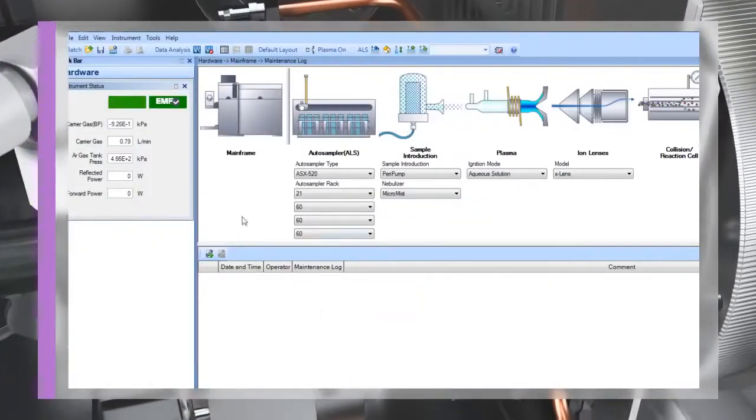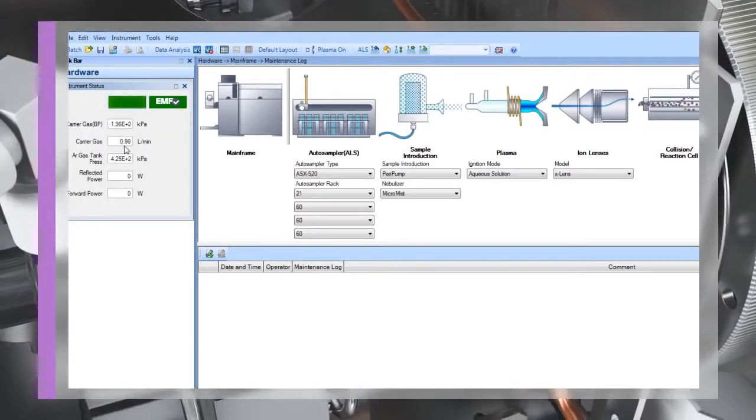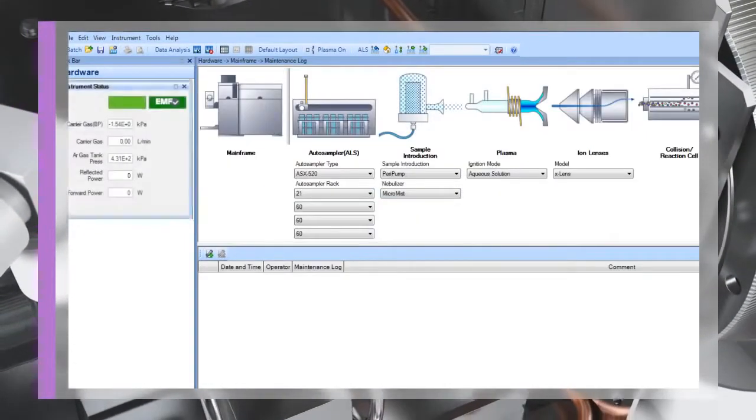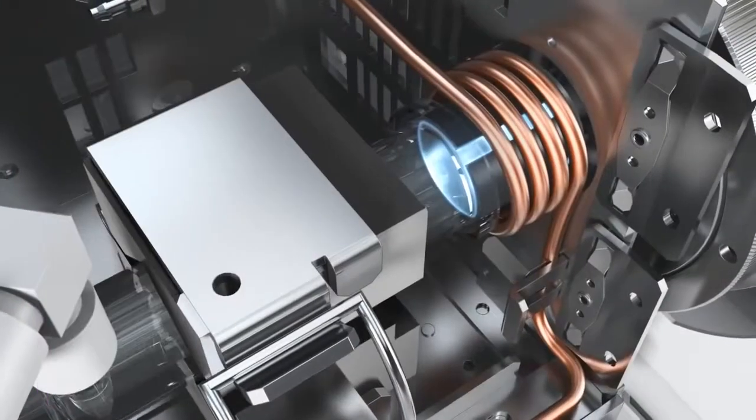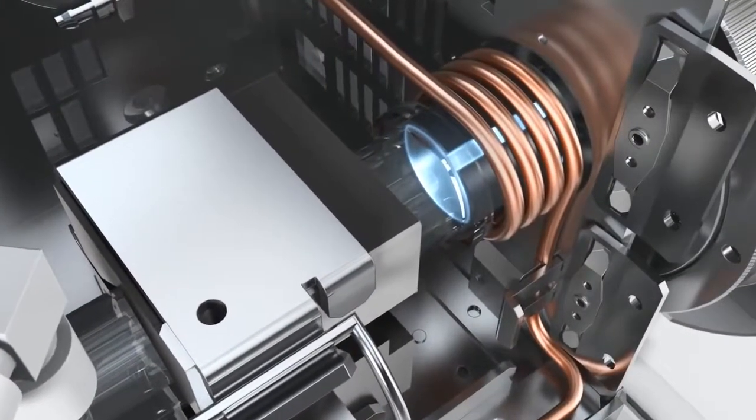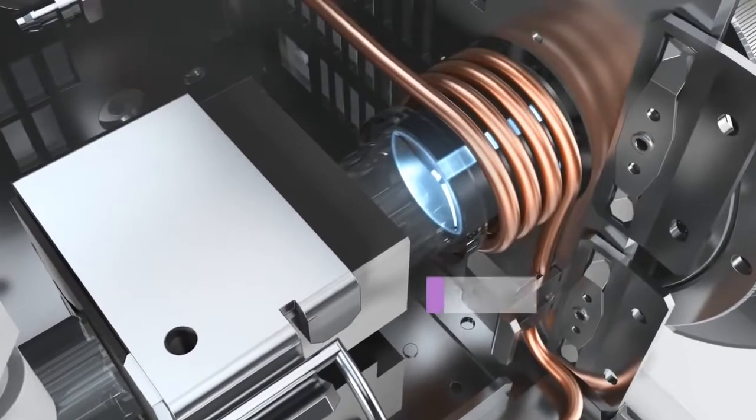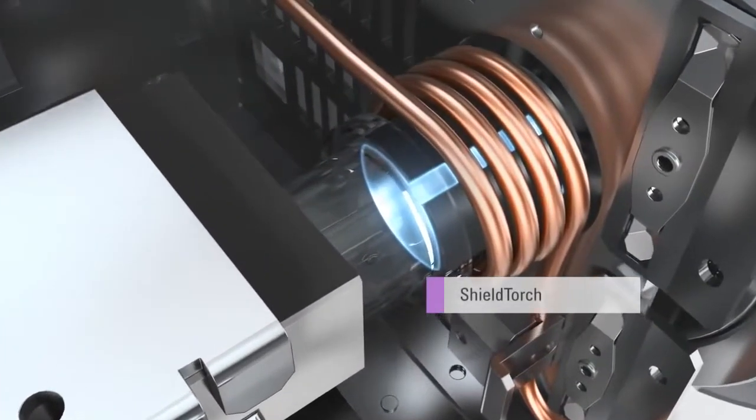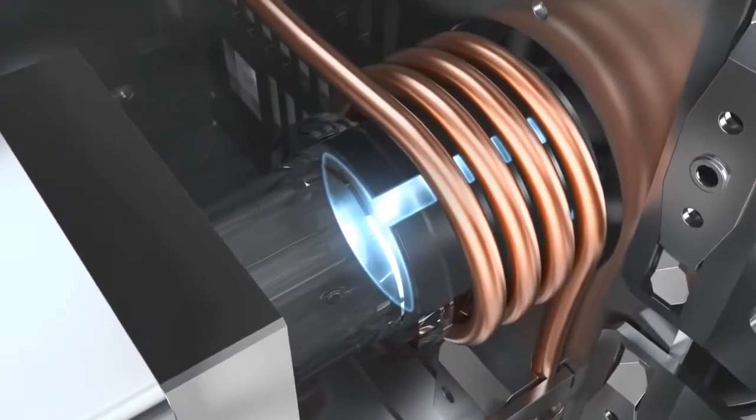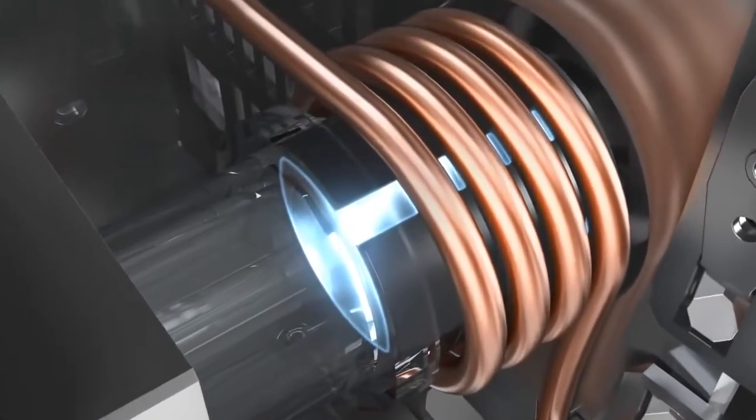The torch position optimization is automated as part of the MassHunter software startup sequence, ensuring consistent operation from day to day. All 7700 series instruments are fitted with Agilent's shield torch system, which ensures that ions enter the vacuum system with a narrow energy distribution. This is essential for the most efficient interference removal in the collision reaction cell.